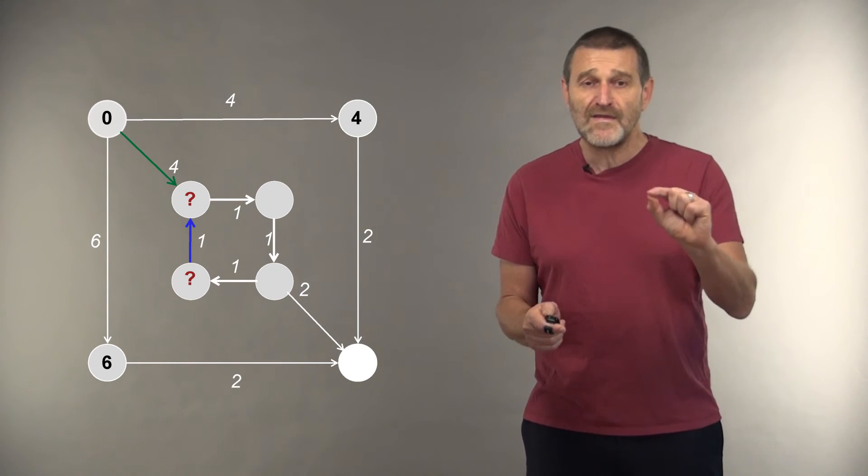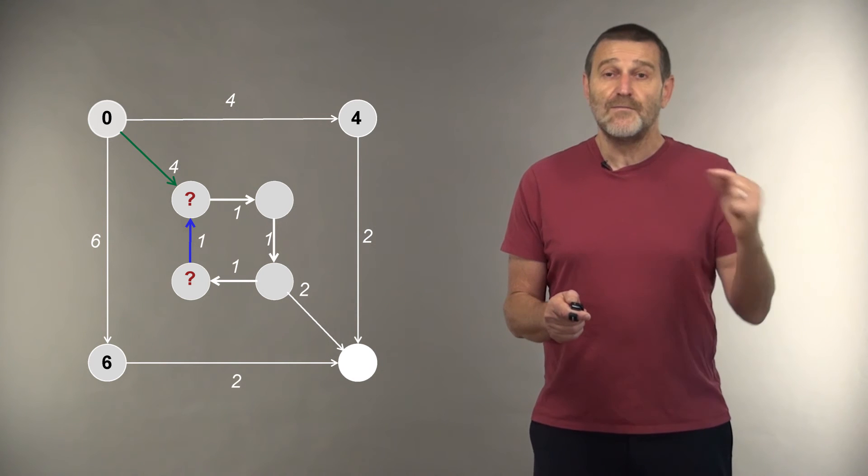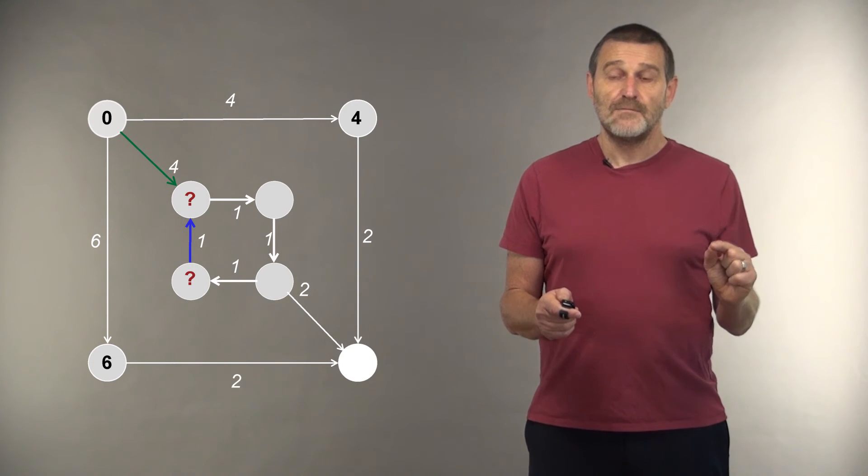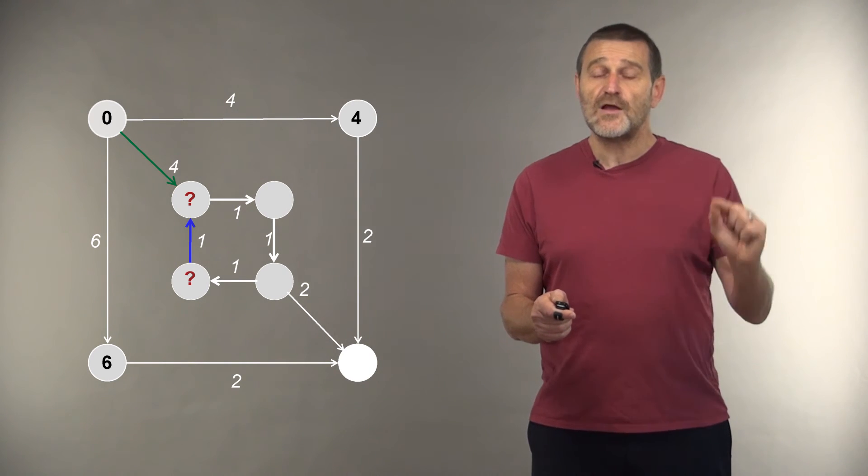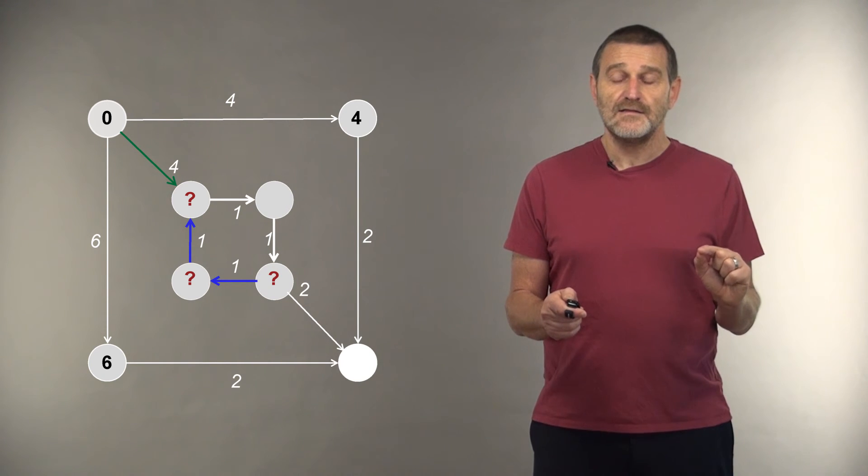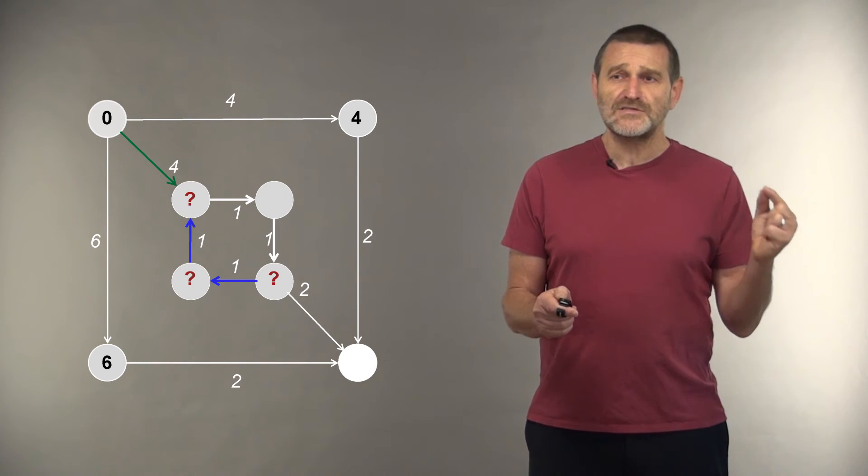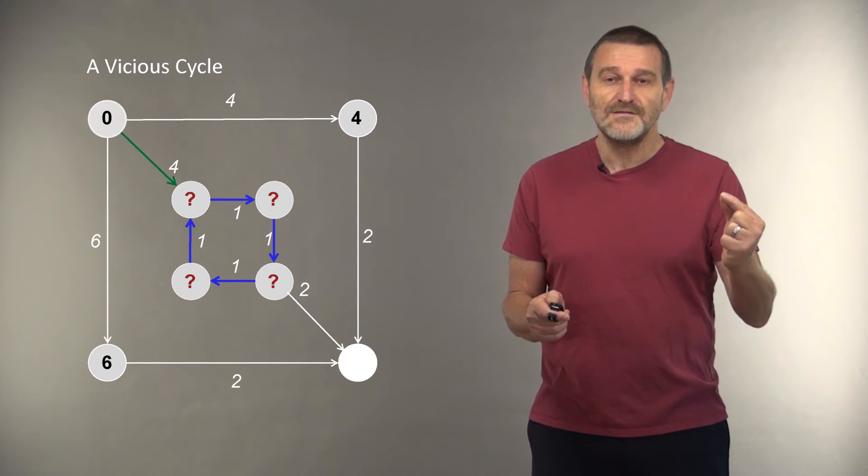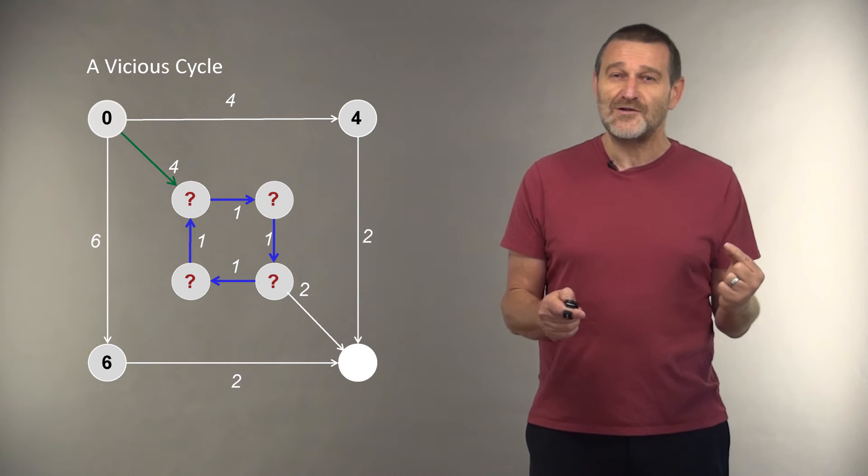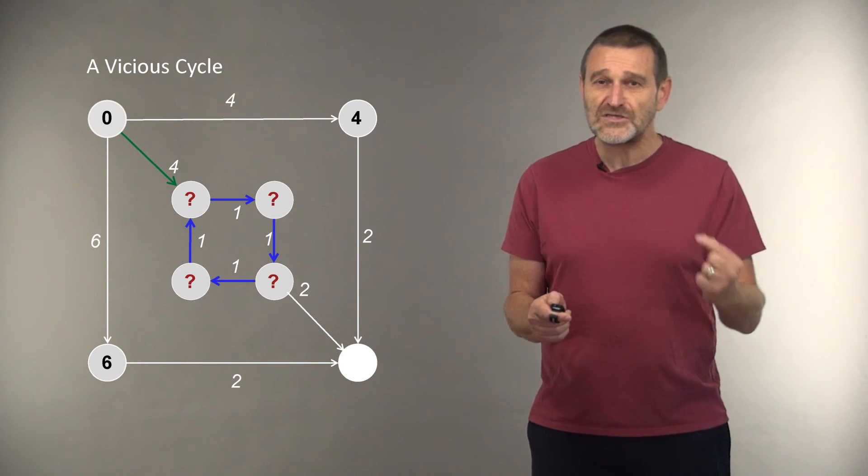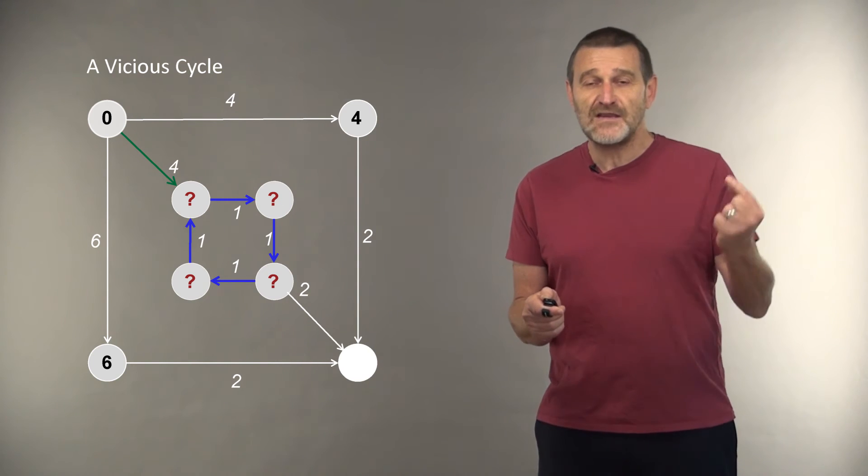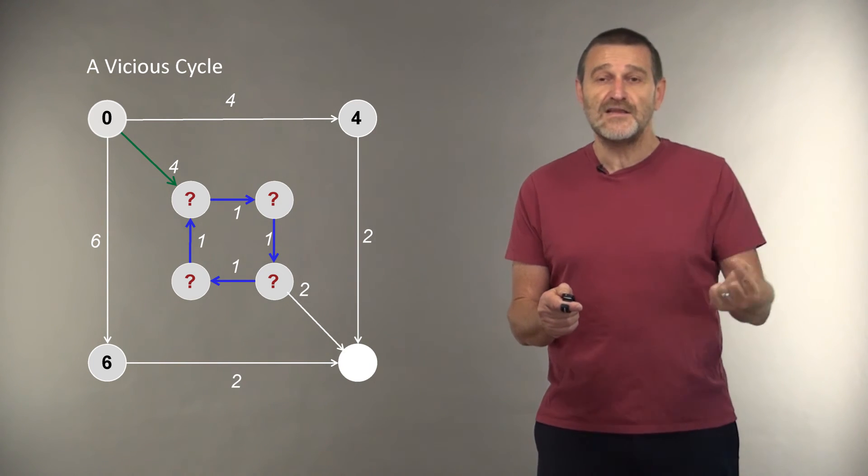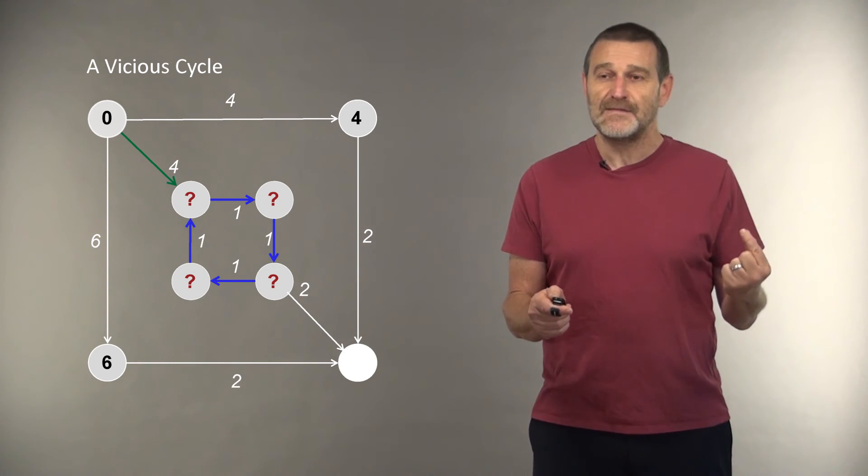Therefore, before we compute the score for the node shown by the question mark, we need to compute one more score, which is this one. But to compute this score, we need to compute the score in another vertex shown here. But to compute the score of this vertex, we need to compute the score for this one. And to compute the score for this one, we need to compute the score that we have been trying to compute some time ago. So we came to a vicious circle. It looks like a catch-22. We need to compute something that has not been computed yet. But to compute it, we need to compute something else again and again and again.